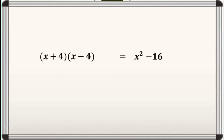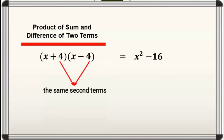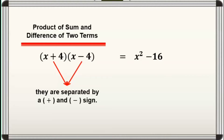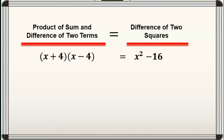From our previous activity, let us take the first given. We have quantity x plus 4 times quantity x minus 4, which is equal to x squared minus 16. Ang quantity x plus 4 times quantity x minus 4 ay tinatawag nating product of sum and difference of two terms. Dahil, kung mapapansin natin pareho ang kanilang first terms, ganun din ang kanilang second terms, at ang dalawang factors ay separated ng plus at minus signs. Tandaan na magkapareho lang ang ibig sabihin kahit na unahin natin ang may plus o ang may minus sign. On the other side of our equation, ang product ng sum and difference of two terms ay tinatawag nating difference of two squares.